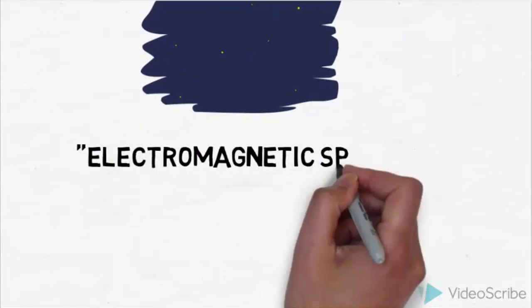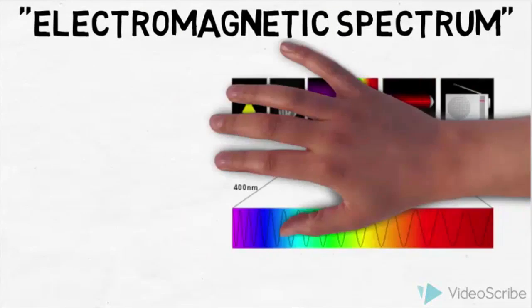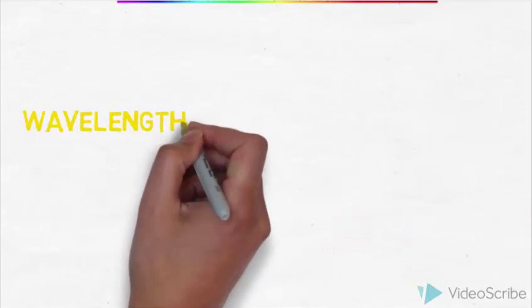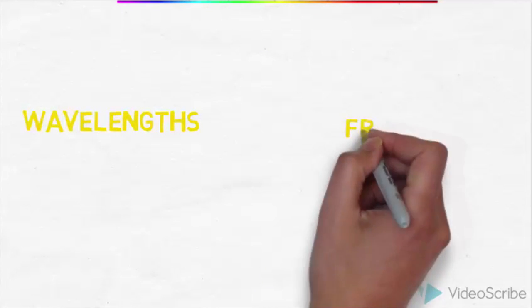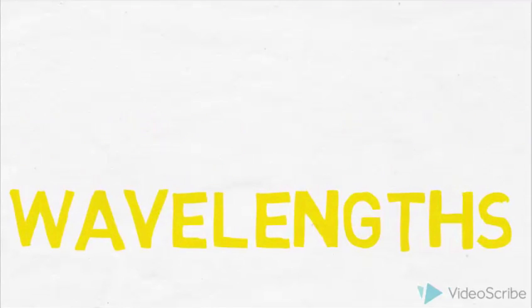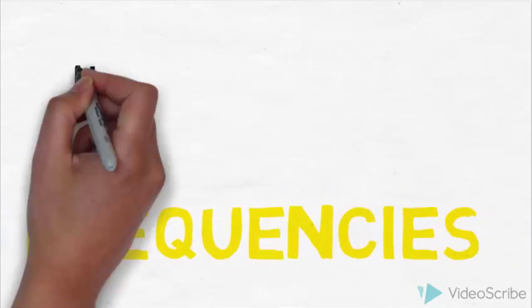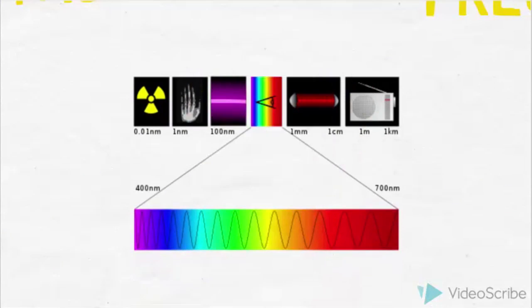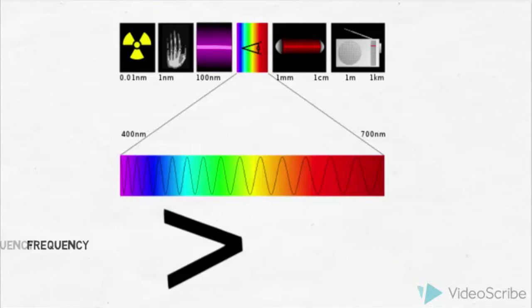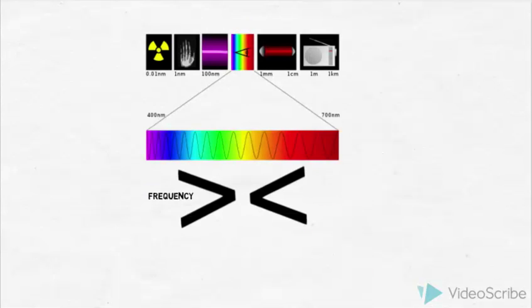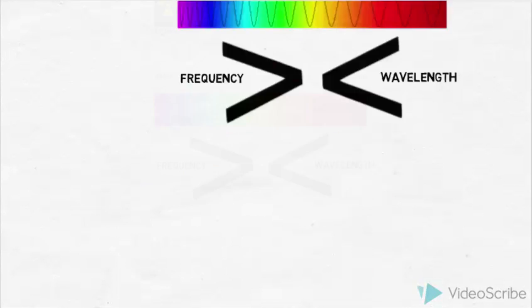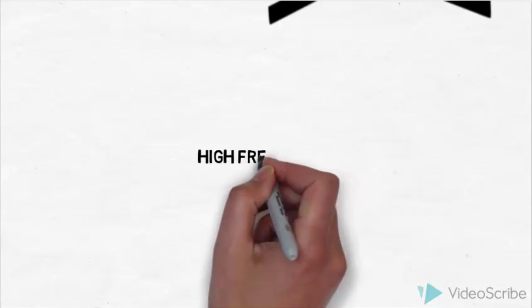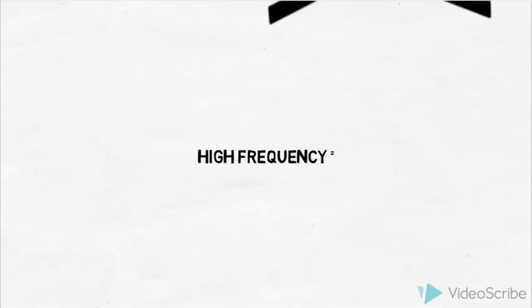EM waves are compiled and arranged in the electromagnetic spectrum. The waves are arranged in order of their wavelengths and frequencies, from the shortest to longest wavelength or highest to lowest frequency. The low-frequency waves have long wavelengths and high-frequency have shortest wavelengths, but all travel at the same speed. High-frequency waves also produce high energy.